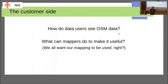We're going to look at how data users see OpenStreetMap data — how people like me and Sarah who are consuming this data actually make any use of it. And also, from the point of view of individual contributors, what can you do to make sure that your data is actually used? We contribute to OpenStreetMap because we want our data to be used. We're going to explore the relationship between mappers and data users, and how sometimes it works and sometimes it's more complicated.